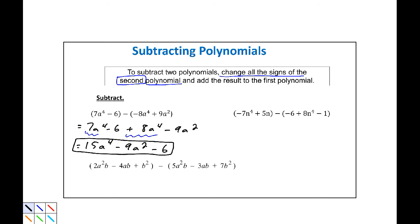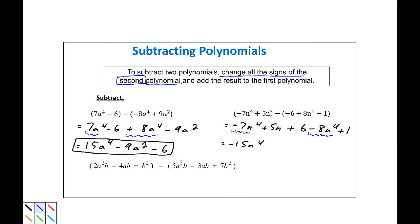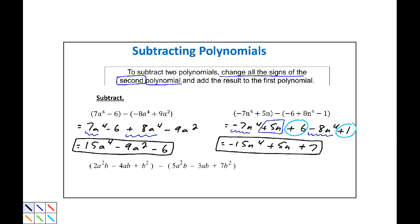Our next example: my first polynomial is negative 7a to the 4th plus 5n, minus my second polynomial, negative 6 plus 8a to the 4th minus 1. Again, I'm going to rewrite this. Bringing down my first polynomial, negative 7a to the 4th plus 5n, plus the opposite of the second polynomial, which is 6 minus 8a to the 4th plus 1. Now I can combine negative 7a to the 4th and negative 8a to the 4th — that is negative 15a to the 4th. I only have one n term, so I'll bring down the plus 5n. And I have two like constant terms: plus 6 and plus 1, which come down as plus 7. So the resulting polynomial is negative 15a to the 4th plus 5n plus 7.